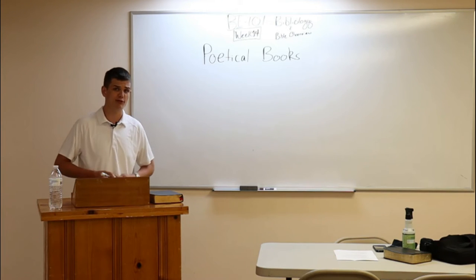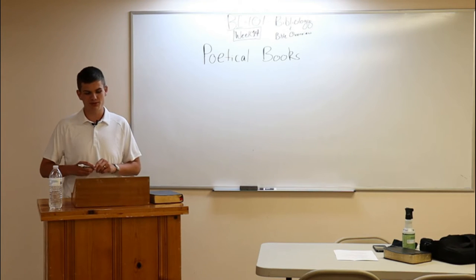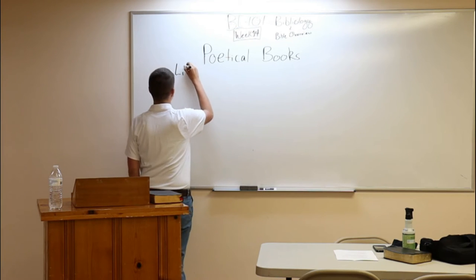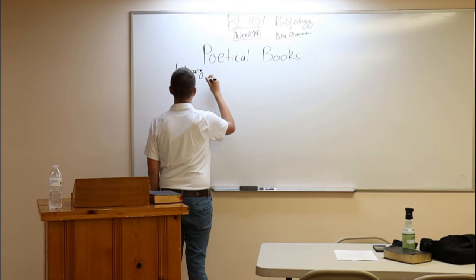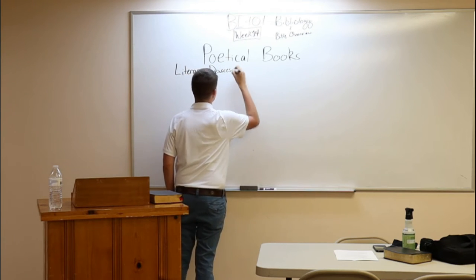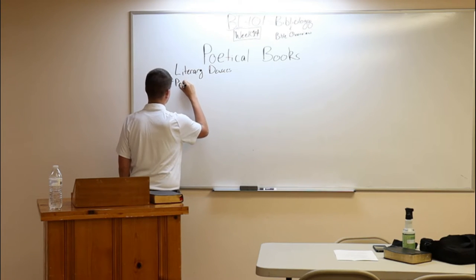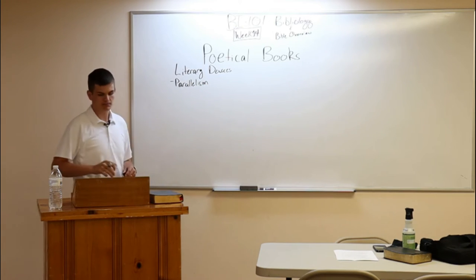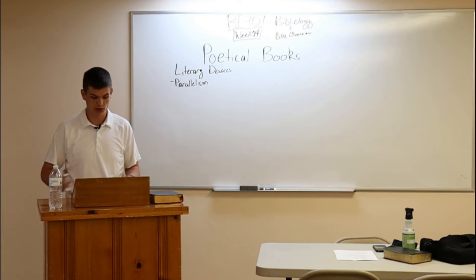We could probably spend several classes talking about literary devices and the nuances of poetry, but we're going to consider two primary literary devices tonight. The first is parallelism, and the second is figures of speech, and we'll look at some examples of those. With parallelism, there are five different types that we're going to consider.